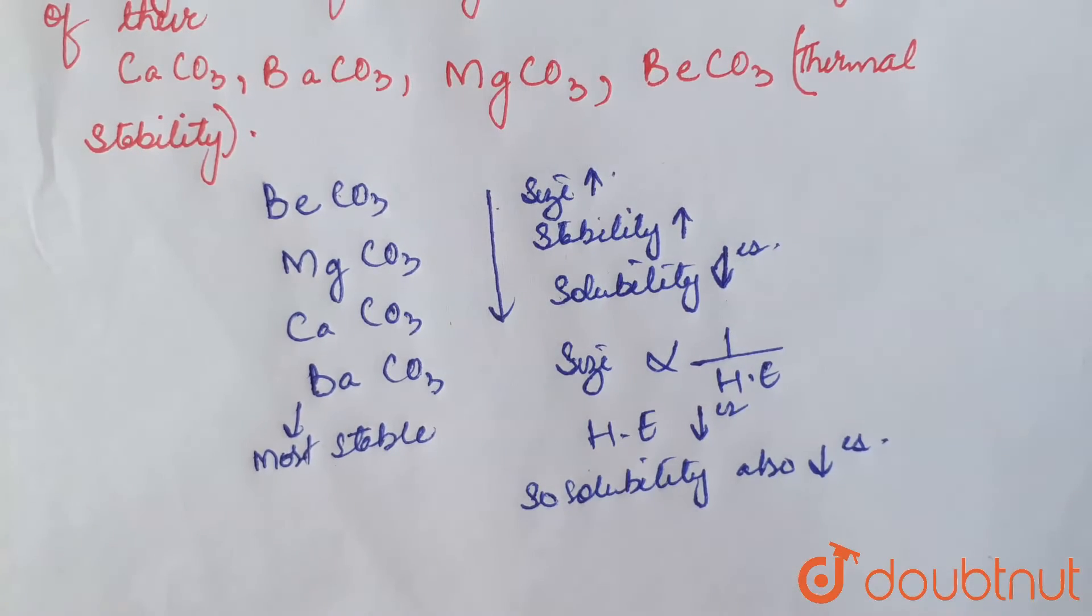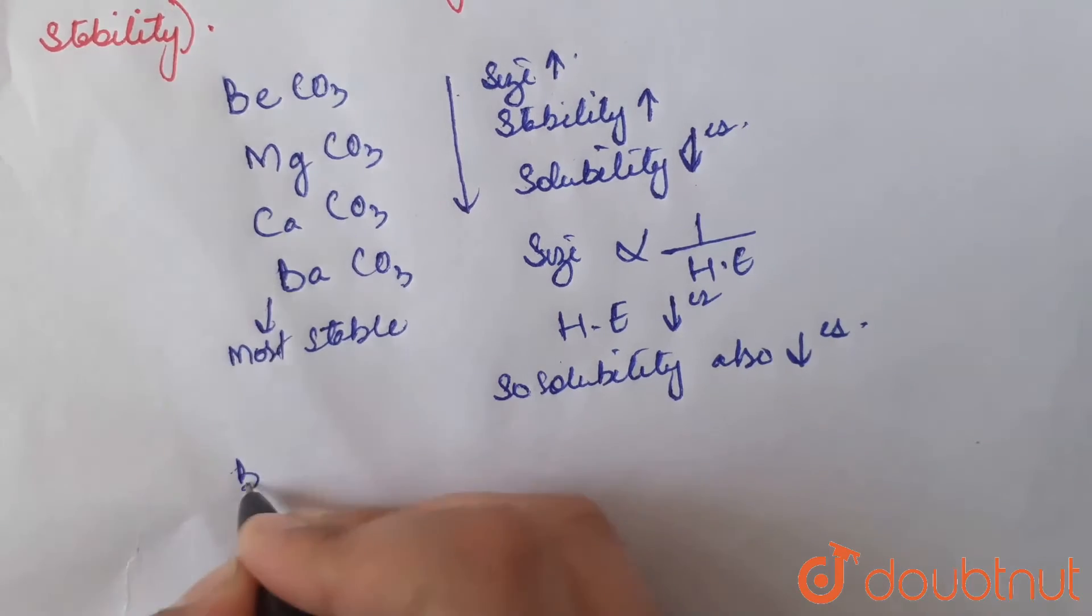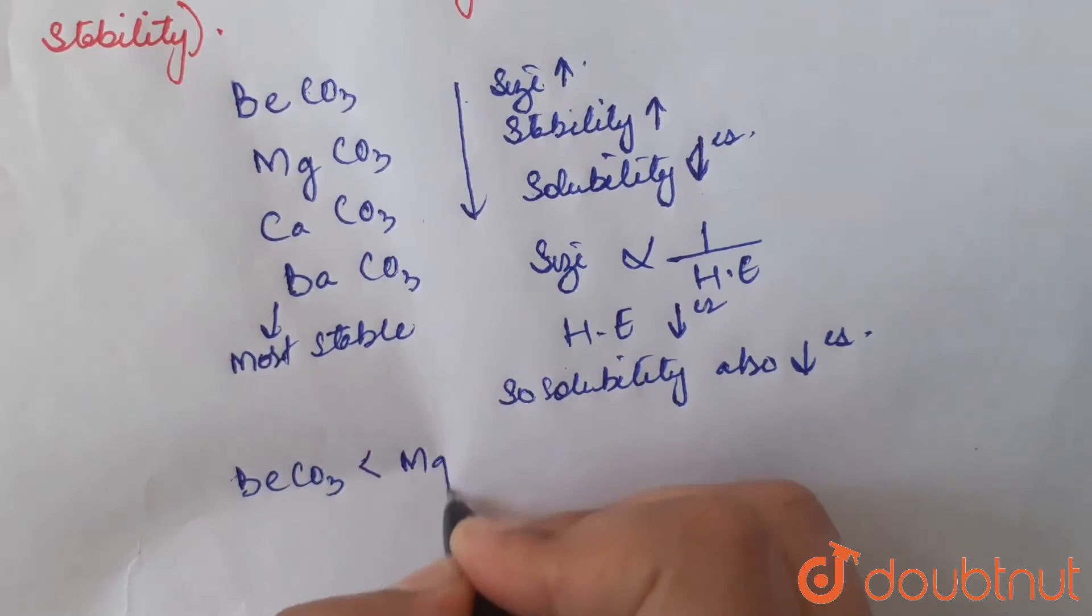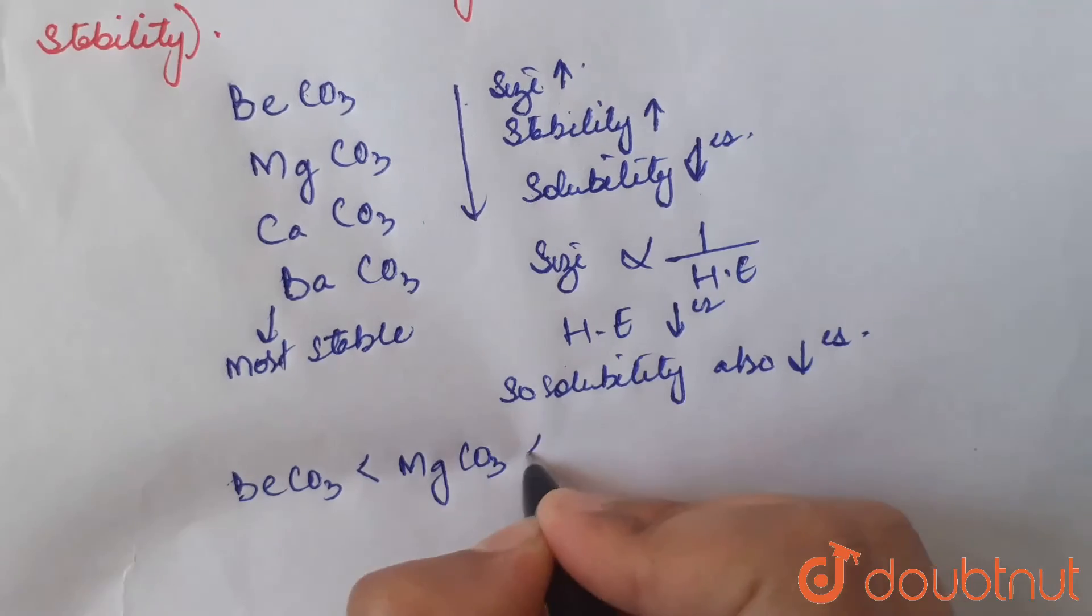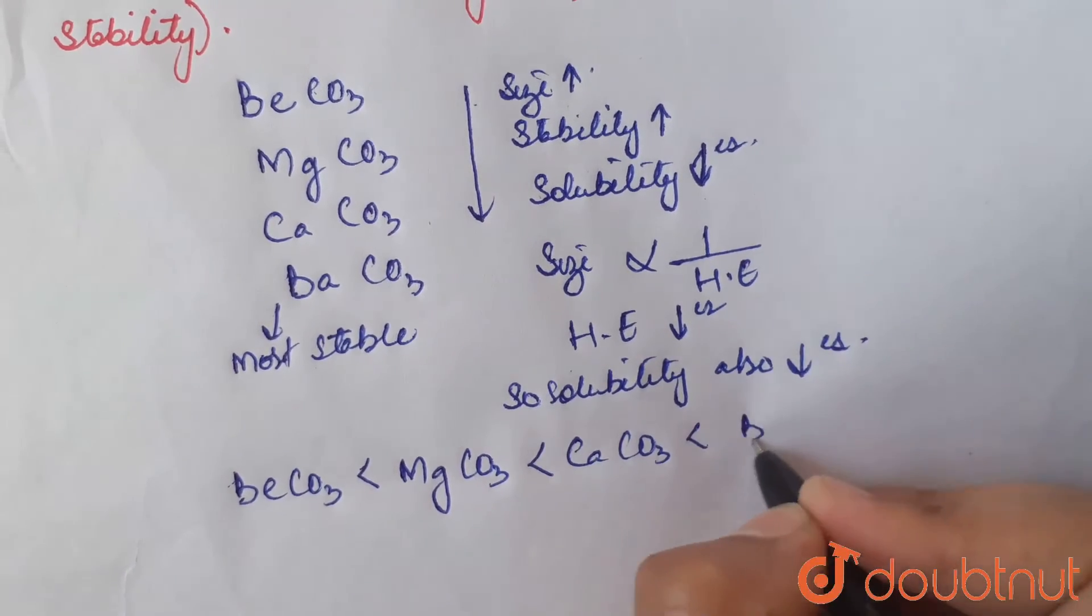Now, arranging these carbonates in the increasing order of their stability, we have beryllium carbonate less than magnesium carbonate, then calcium carbonate, then barium carbonate.